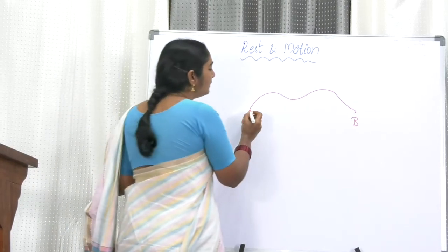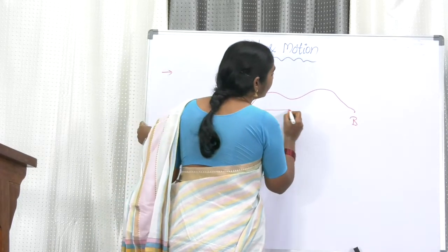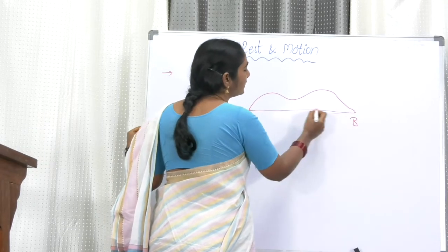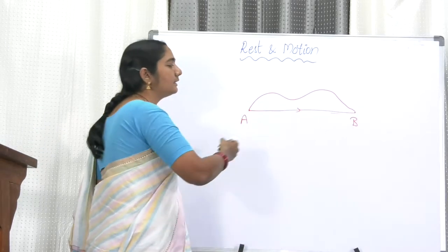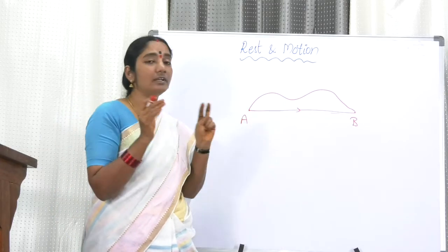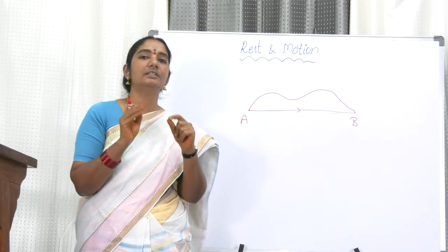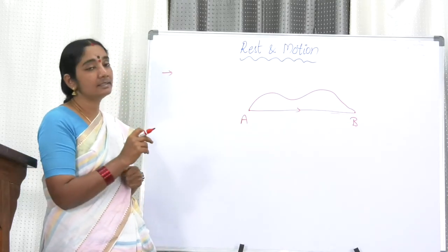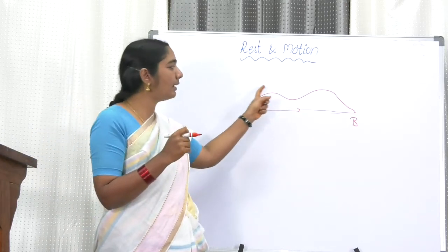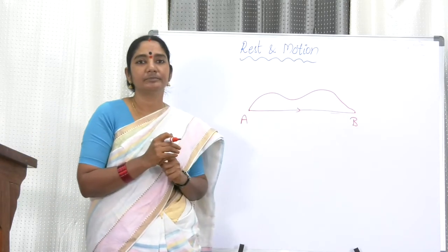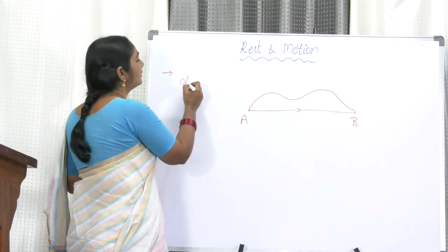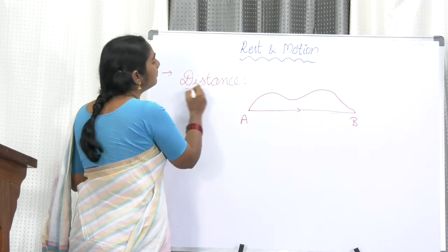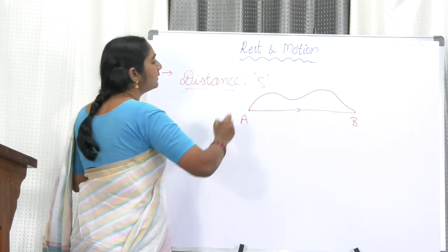Displacement means the shortest path between A and B. If you draw the shortest line, it is a straight line — we join A to B directly. So that is called the shortest distance between A and B, and we call that the displacement. Distance is nothing but the actual path covered by the body.